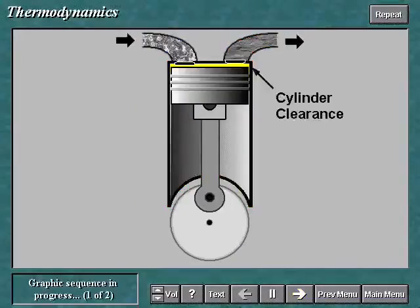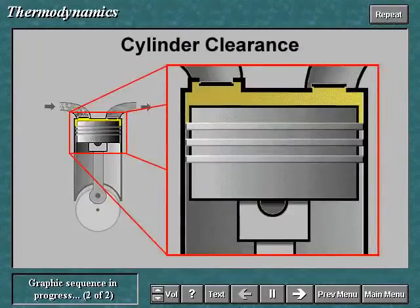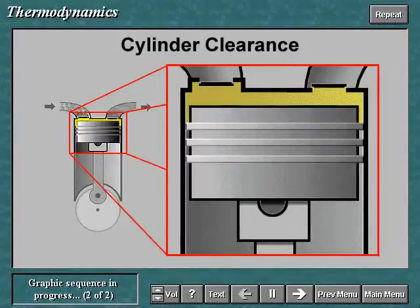In each cycle, there is an area of the cylinder that is not swept by the piston. A volume of gas remains in this area at the end of each compression stroke. This volume is called the cylinder clearance. The cylinder clearance consists of the volume between the cylinder head and the piston at the end of the stroke, the volume between the cylinder walls and the valves, and the volume due to the difference between the diameter of the piston and the diameter of the cylinder.